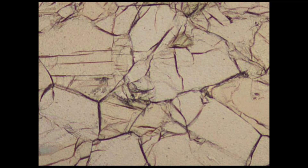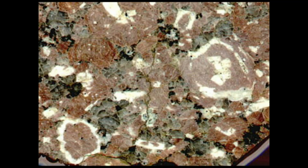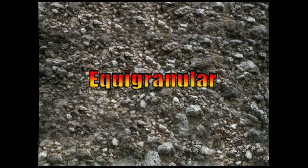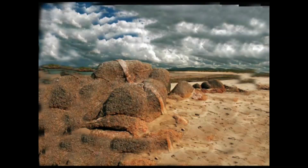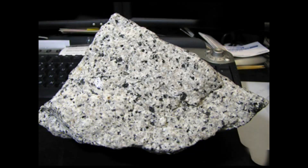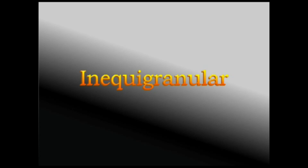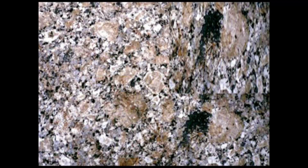On the basis of relative size of the crystals, we can subdivide igneous texture into two types: equi-granular and inequi-granular. Equi-granular rocks are those where the major constituent minerals are all approximately the same size — called equi-granular or even-grained in hand sample. Inequi-granular refers to when there is sufficient variation in size of the constituent minerals to change the overall fabric of the rock.